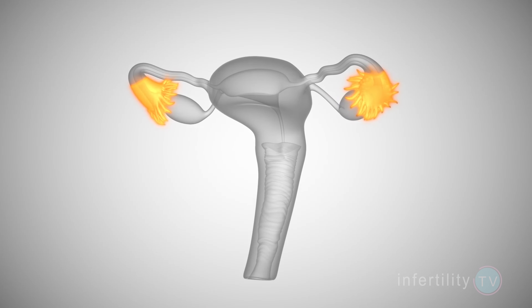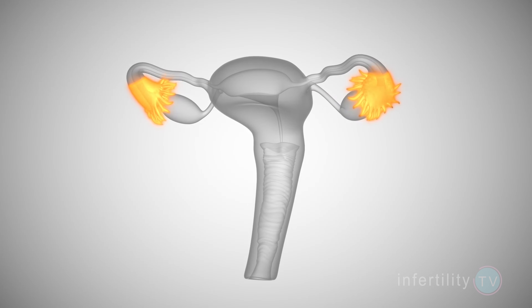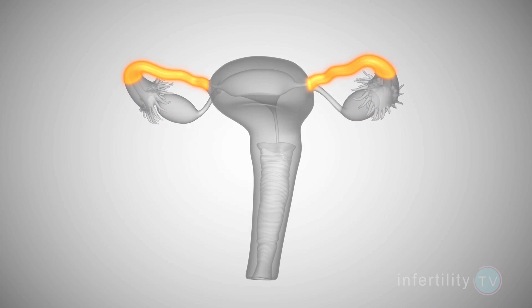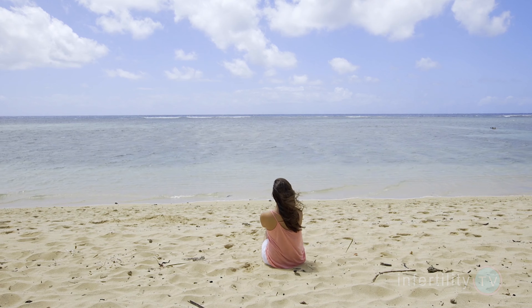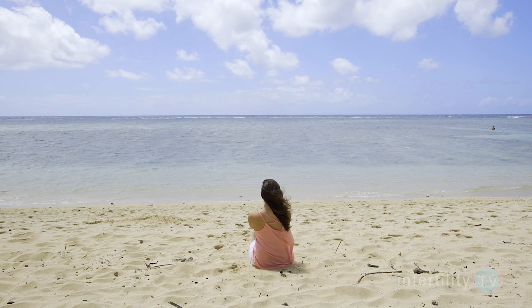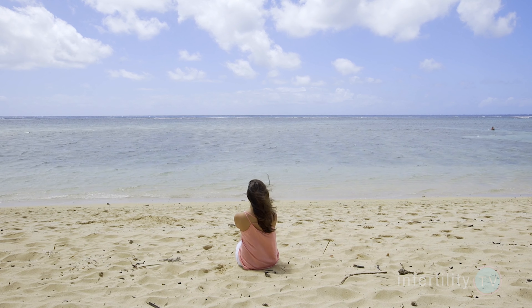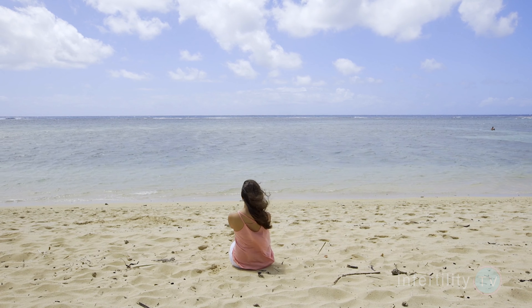Scar tissue can cause a woman's anatomy to become distorted and make it harder for an egg to get into the fallopian tube at the time of ovulation, so it's easier to understand how adhesions interfere with fertility. Women who have only a small amount of endometriosis and no scar tissue still have more difficulty getting pregnant, but it's less certain what the reasons for infertility are in those cases.